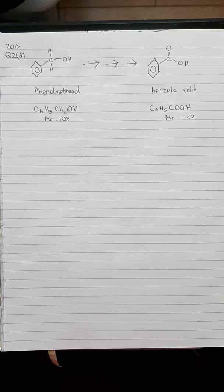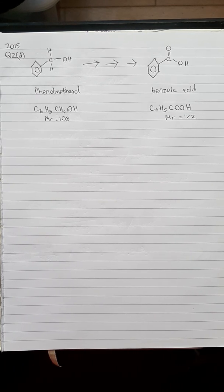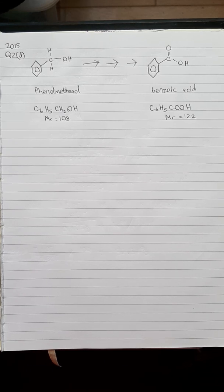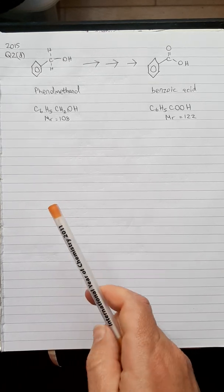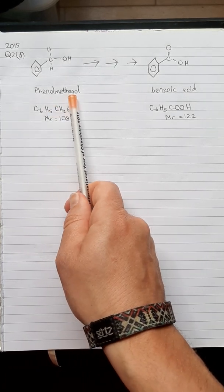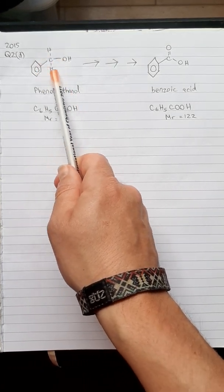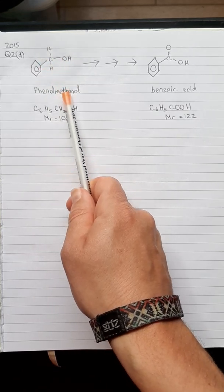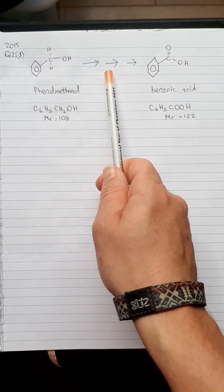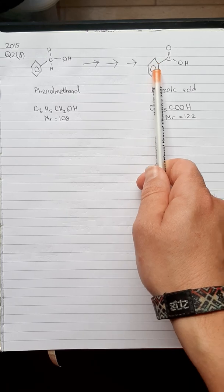Because you're preparing something from something else, very often they ask you the question percentage yield. The reason is because you can see how much you actually achieved from your starting material. In this case, you start with phenylmethanol, and you get benzoic acid after a number of steps.